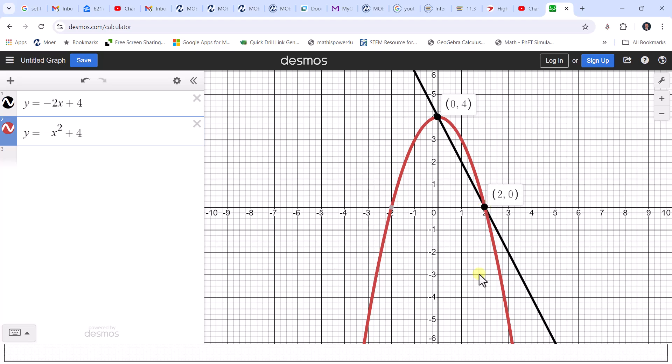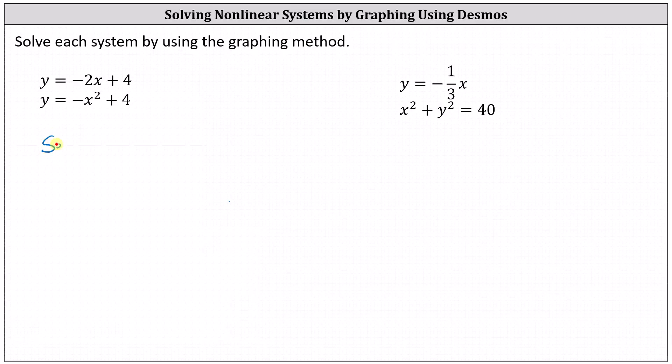Let's record the solutions. And again, this indicates one solution is x equals zero and y equals four. Another solution is x equals two and y equals zero. And of course, we can always check these by performing substitution.